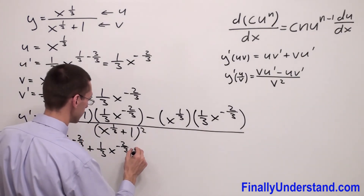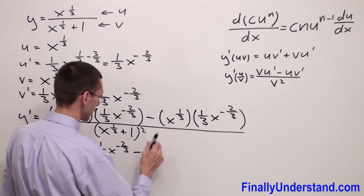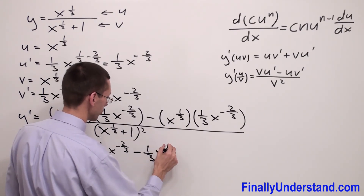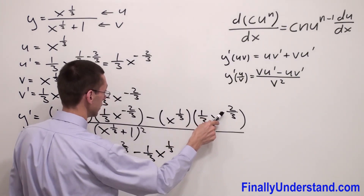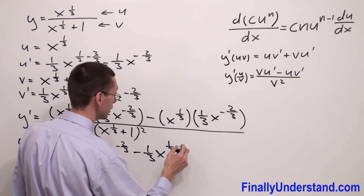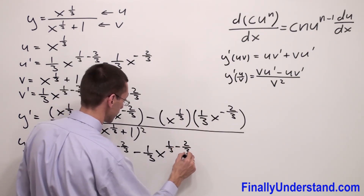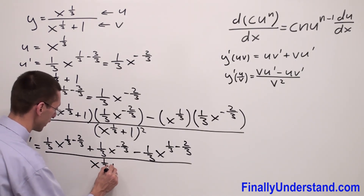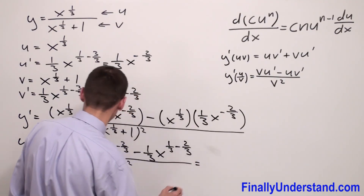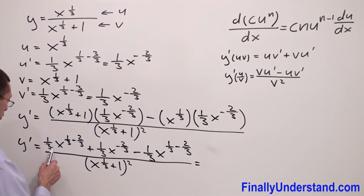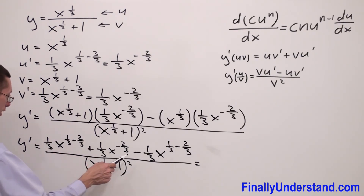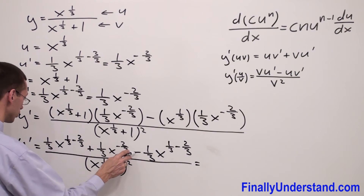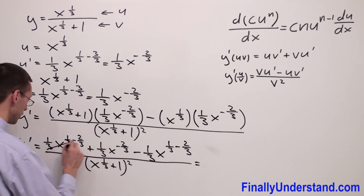Over here, I have a negative sign and 1 third. The base stays the same and I simply add the exponents, so I have 1 third plus 1 third. So I have negative sign, negative 2 thirds. Please notice that I have 1 third minus 2 thirds and I have negative 1 third x to the 1 third minus 2 thirds — they are exactly the same terms and they subtract each other because they have different signs, so I'm going to cross them out.